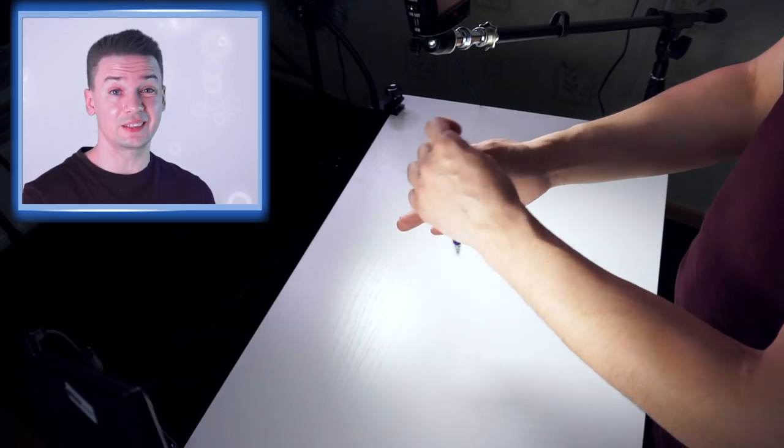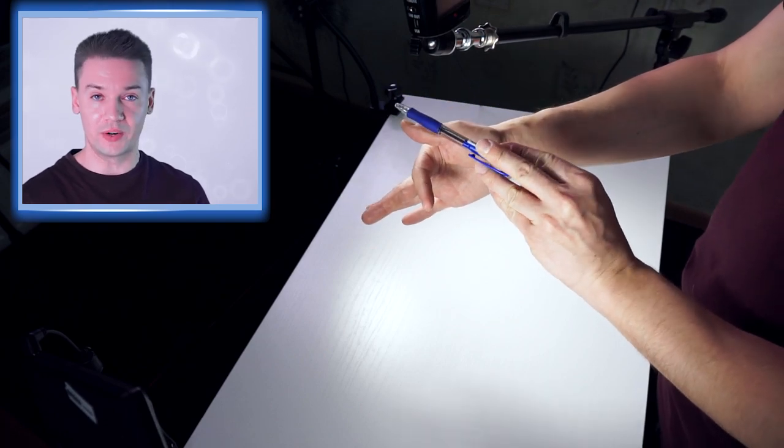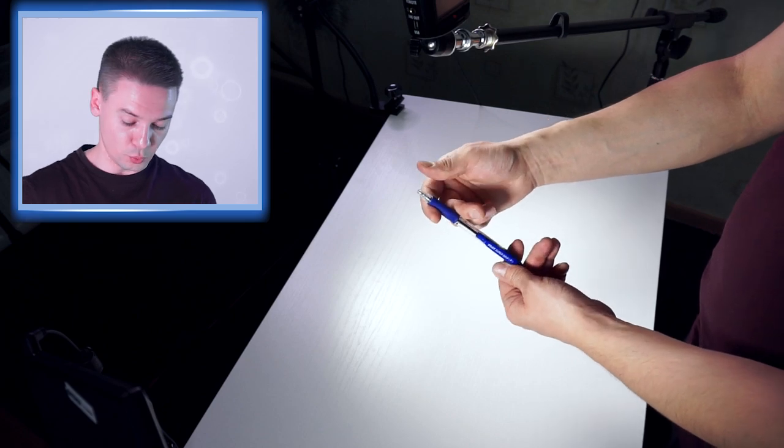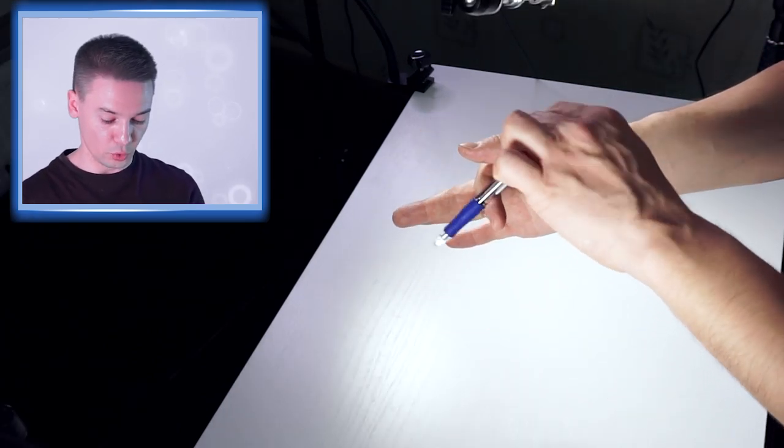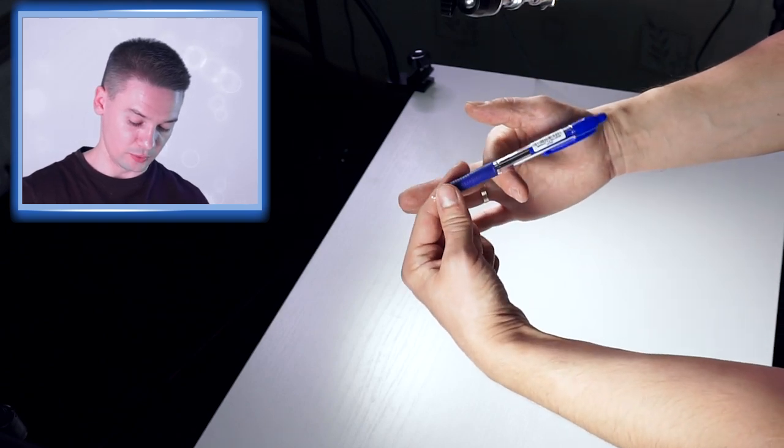PewDiePie's mistake when he did this trick was to throw pen in the air, losing control over it, instead of just applying the right force to it, so it wouldn't lose touch with index finger at all, it would always be on it, touching your finger.